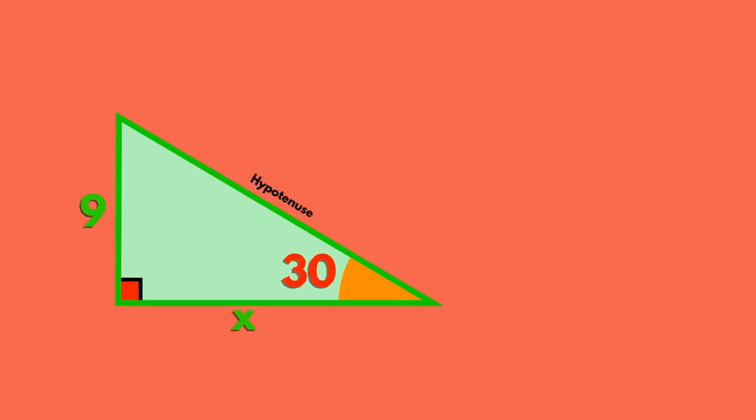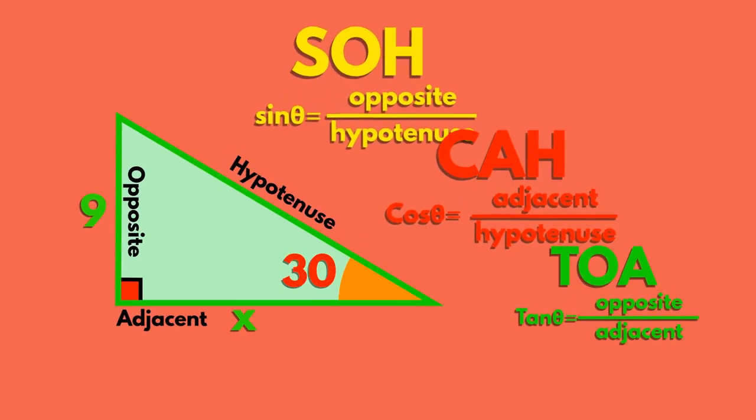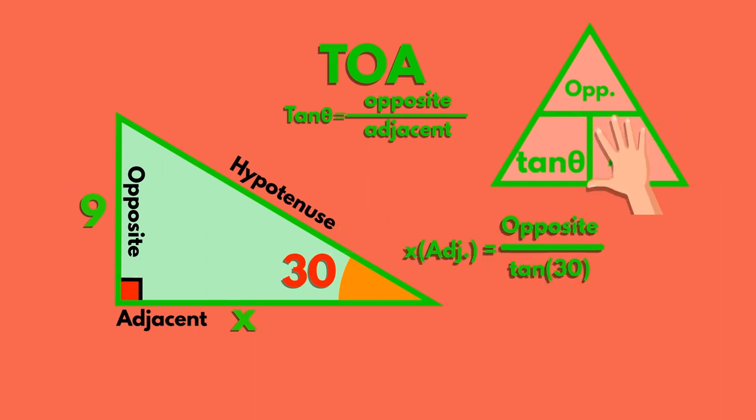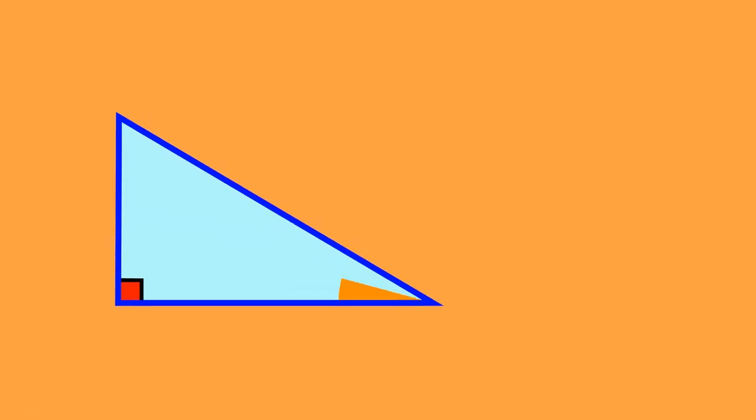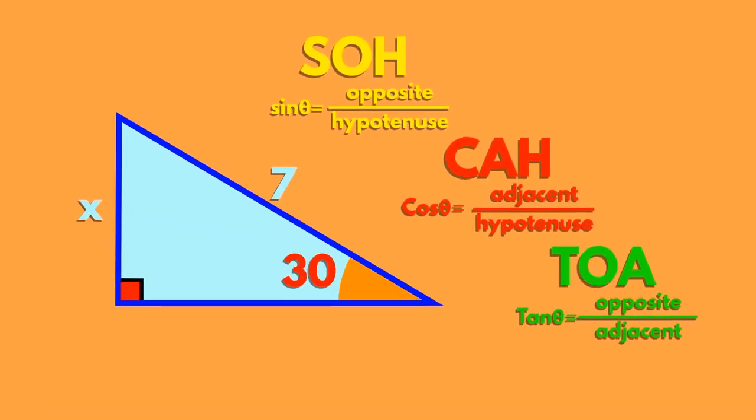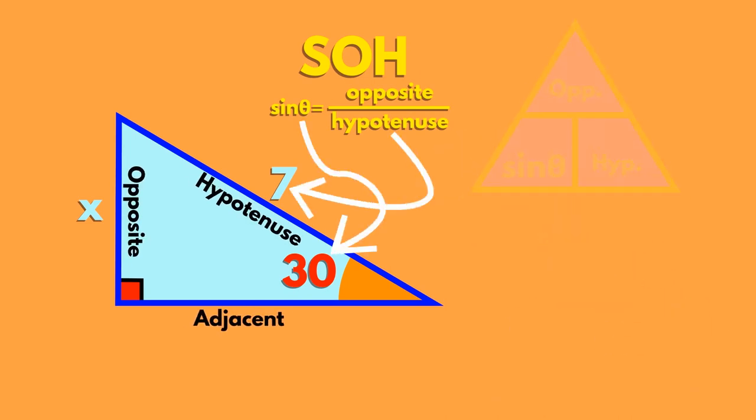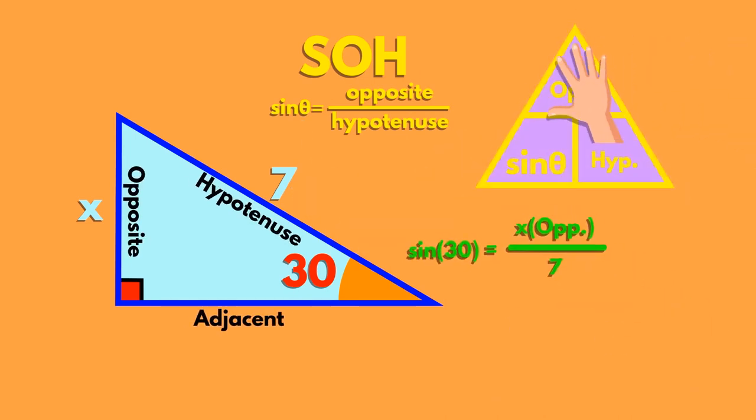Once you've correctly labeled the sides and decided which trig ratio you are going to use, you can now go about finding either the missing side length or the missing angle. Why not try it yourself? Label the sides of this triangle, then use this information to determine which trig ratio you need to use. Use this to find the length of the missing side.